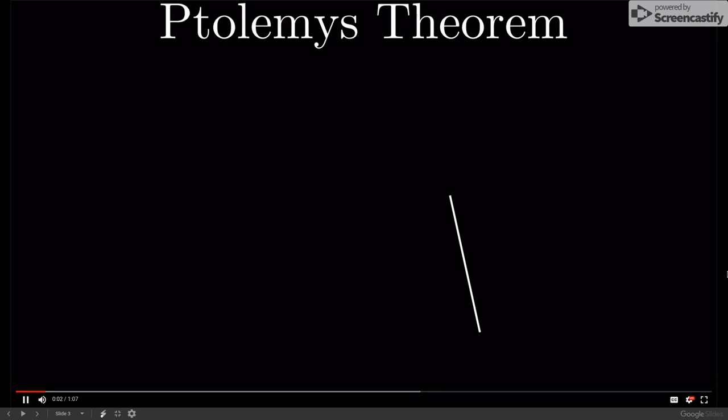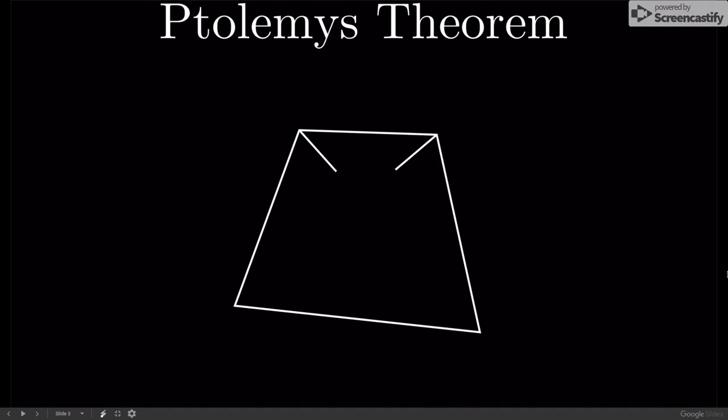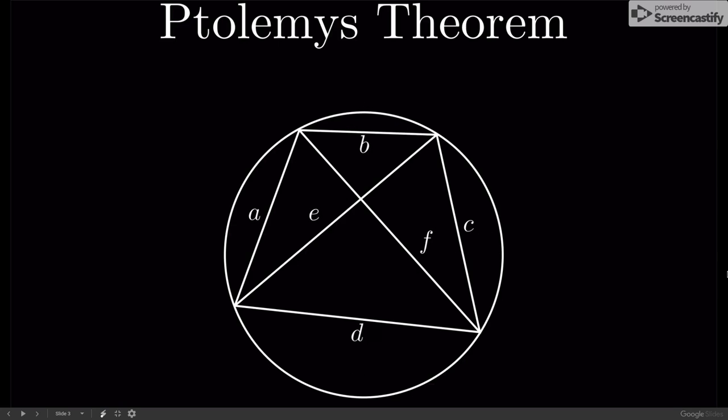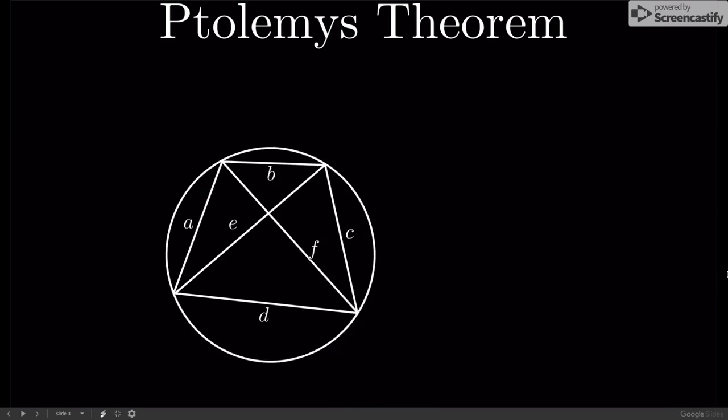In Ptolemy's Theorem, let's first start off by drawing a quadrilateral with its diagonals and inscribing it in a circle. We'll label each side length as such.